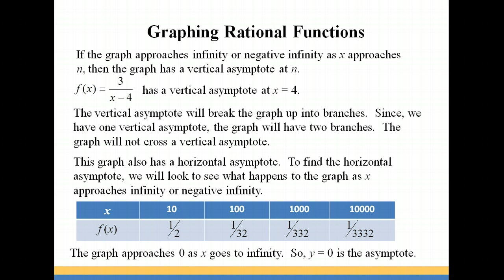So the line at y equals 0, or the x-axis, is an asymptote for this graph as well. This will be our horizontal asymptote. You can also try on your own to do some negative values. So put in negative 10, negative 100, negative 1,000, and negative 10,000. And what you should find is those numbers approach 0 as well, but they will all be on the negative side of the x-axis.